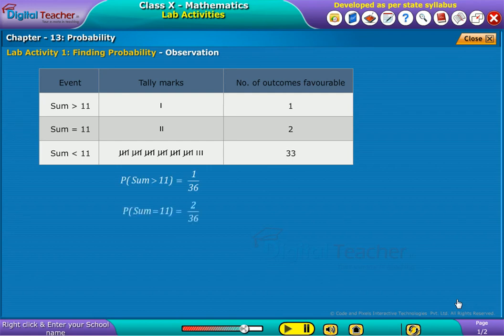So the probabilities of three cases according to the table can be written as shown on screen. The probability of an event is equal to sum of all three probabilities, which is equal to one.